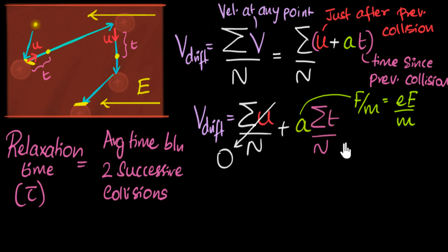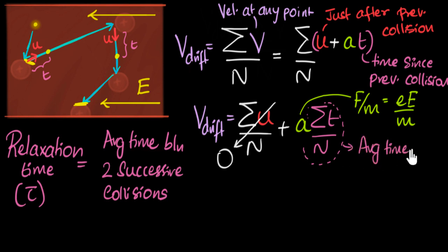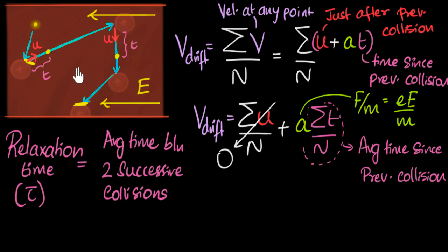The remaining term (sigma t)/n is just the average value of t, where t is the time since the previous collision. So this number is the average time since the previous collision. For example, if this average were two minutes, it means that if you took an electron at many different times and asked how long since its last collision, the average answer would be two minutes — some gaps might be four minutes, three minutes, or ten minutes, but averaged out it equals two minutes.